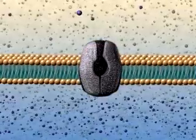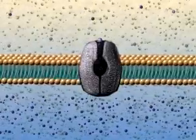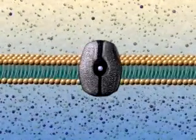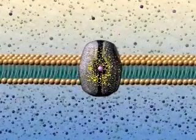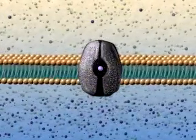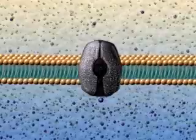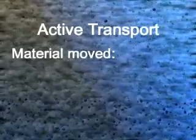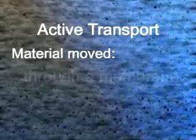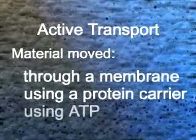However, there are materials that need to be moved against their concentration gradient. This process requires energy, ATP, and protein carriers that are found in the plasma membrane. Active transport is defined as material moved from a low concentration to a high concentration through a membrane using a protein carrier that requires ATP.